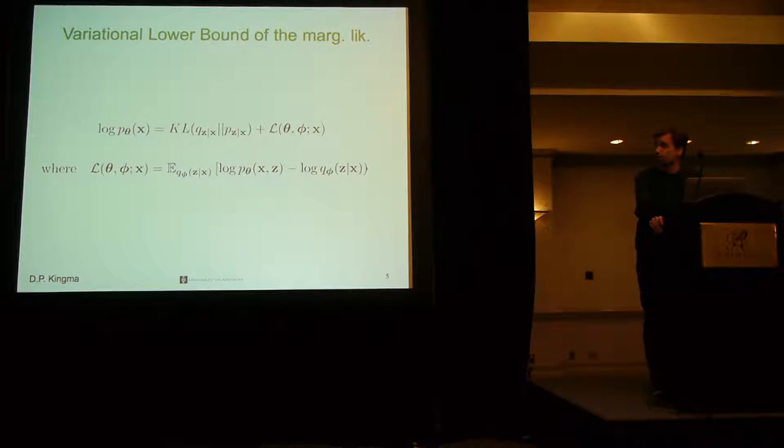Quick review of the variational lower bound. You can decompose marginal likelihood over your observations into a sum of two terms. The first term being the KL divergence between the approximate and true posterior, which is something you cannot compute because the true posterior is intractable, plus this other term called the variational lower bound, since the KL divergence is non-negative. The variational lower bound is this expectation with respect to Q, our approximate inference model, of the joint probability given by the Bayes net, minus log Q.